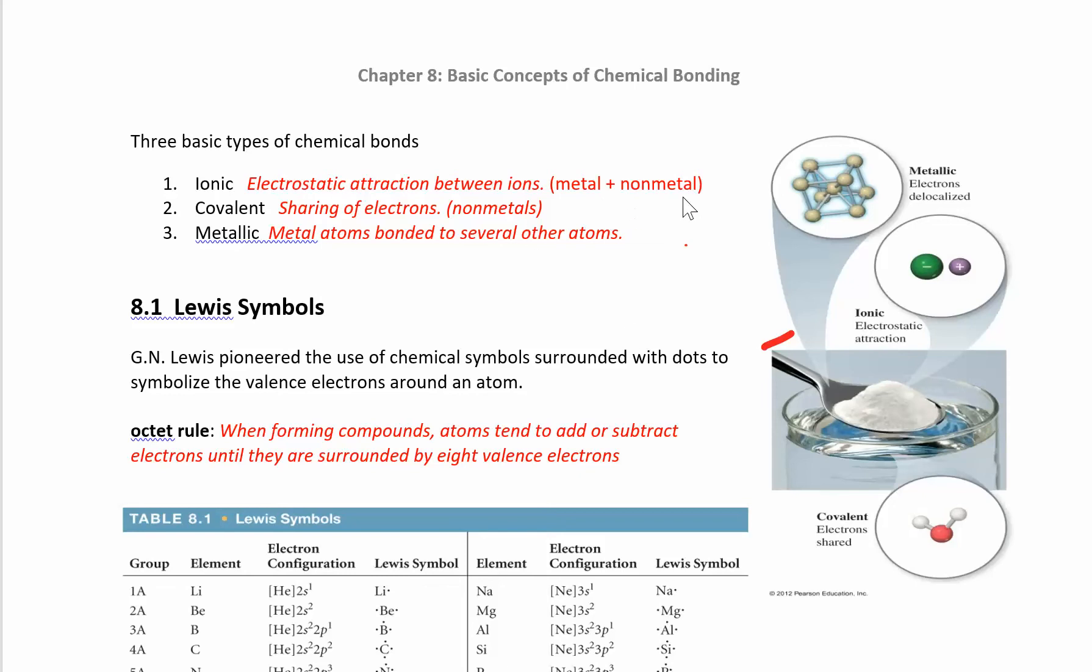You have a cation and an anion, and it involves an electrostatic attraction between these ions. Covalent bonds are between non-metals, and they're sharing electrons. You can share them evenly or unevenly, and then metallic bonds are between metals. We're going to consider metallic bonds in Chapter 12.